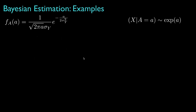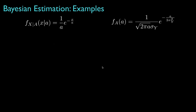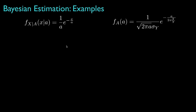Next we need to specify the observation model, which is the density for the observation conditional on the unknown random parameter. Because the observation is conditionally exponential with a mean equal to the value of a, this allows us to specify the mathematical form for this density as an exponential density function. With the observation and prior density specified, we can set up an optimization problem for the MAP estimator, keeping in mind that both the unknown parameter a and the observation x are non-negative.